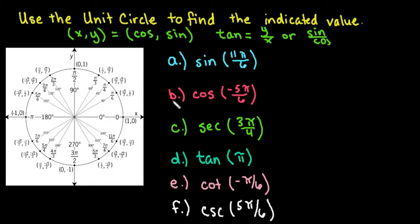I also have the reciprocal functions in here, secant, cotangent, and cosecant. Remember that secant is the reciprocal of cosine, cosecant is the reciprocal of sine, and cotangent is the reciprocal of tangent. So we're going to use these things to help us be able to solve these problems.